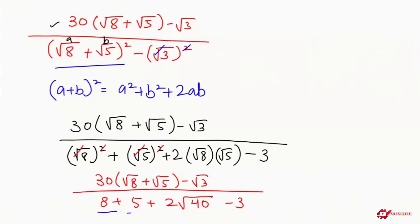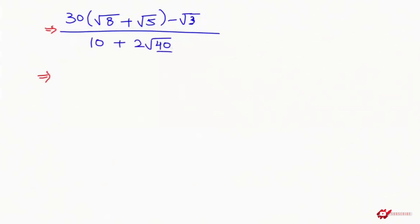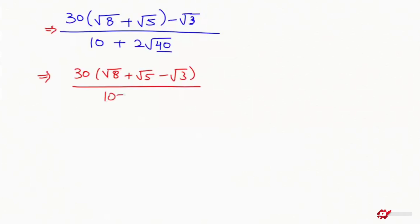I am going to add up: 8 plus 5 is 13, and 13 minus 3 equals 10. So the next expression we get is: 30 times (root 8 plus root 5 minus root 3) over 10 plus 2 root of 40. Next I am going to split this further.